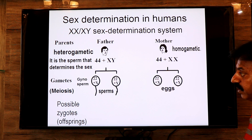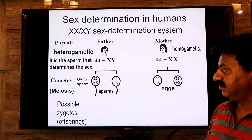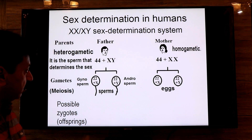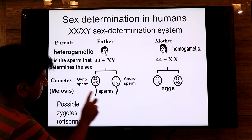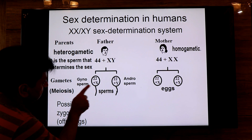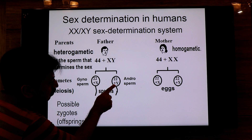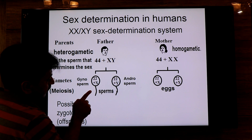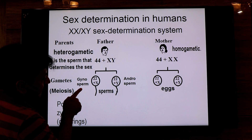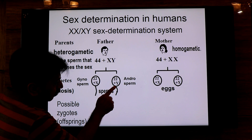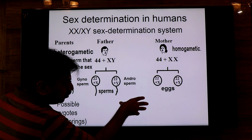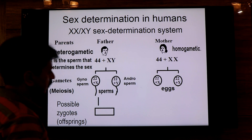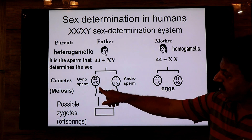The father produces two types of sperm: the sperm with the X chromosome is called a gynosperm ('gyno' stands for female), and the sperm with the Y chromosome is called an androsperm ('andro' stands for male). The male is heterogamous, producing these two types. If the gynosperm fuses with an egg, the resulting zygote will develop into a female. If the androsperm fuses with an egg, the zygote will develop into a male.